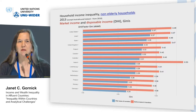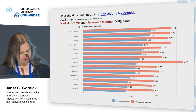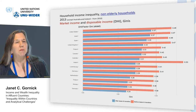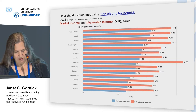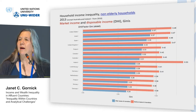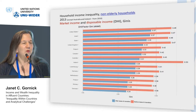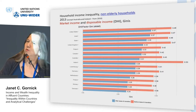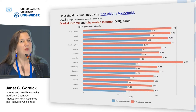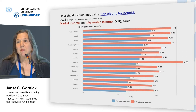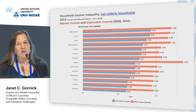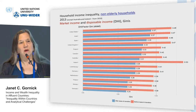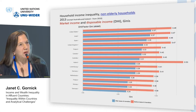Disposable income tells a somewhat similar story — the highest inequality in the United States, tied with Israel, and the lowest in the Nordics and the Netherlands. A very common exercise at LIS is to look at the difference between the lengths of these bars as a proxy for redistribution. Obviously it's a crude and fictive measure — the market distribution is fictional, because if taxes and transfers were removed, we'd have behavioral and demographic effects — but this is simply an accounting exercise.